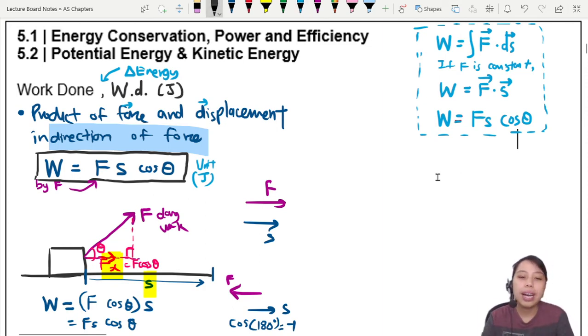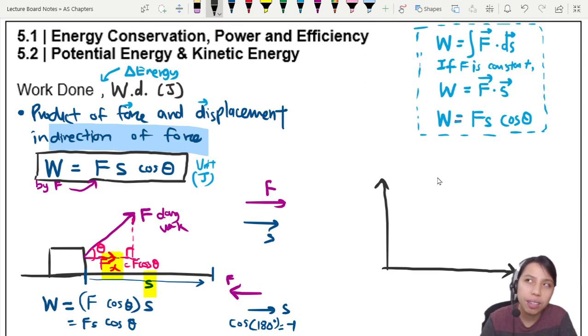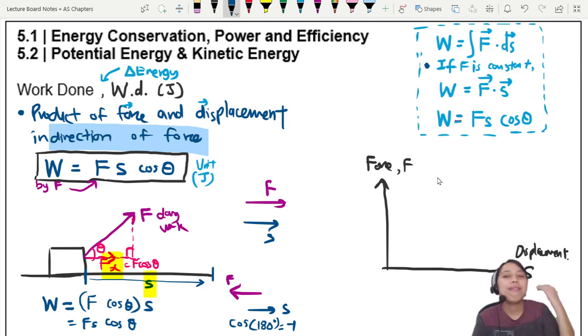Anyway, one last thing to add is that we oftentimes have to think about graphs, especially in the next chapter after this. So if let's say I want to draw a graph of, what shall I draw a graph? Force is changing, S is changing. We'll say, what if force is not changing? Force F, displacement S. Up here, we said just now that if F is constant, this is true. You can only use F S if F is constant or it's an average. So if F is constant, you have something like this.